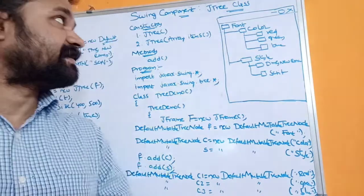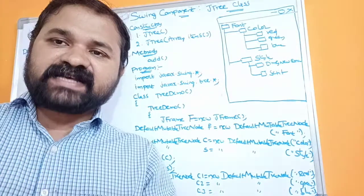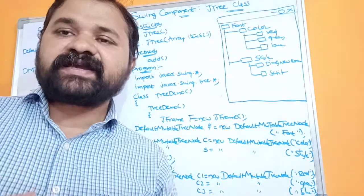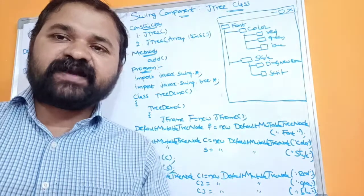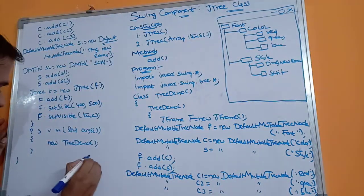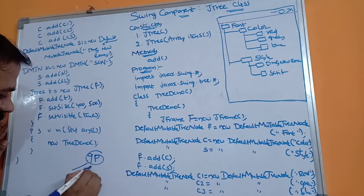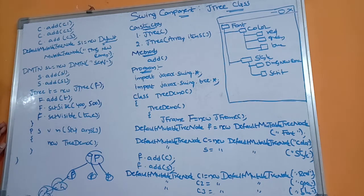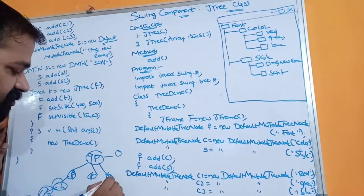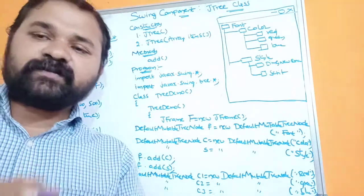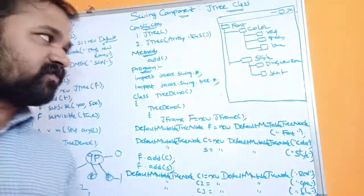The JTree class is mainly useful in order to create a tree. A tree is mainly useful in order to represent hierarchical information, meaning data will be represented at different levels. If you take the example of a family tree, the first level is grandparent, the next level is parents, and the next is children. This grandparent level is called level 0, parent level is level 1, children level is level 2, and so on. To represent hierarchical information we use the JTree class.